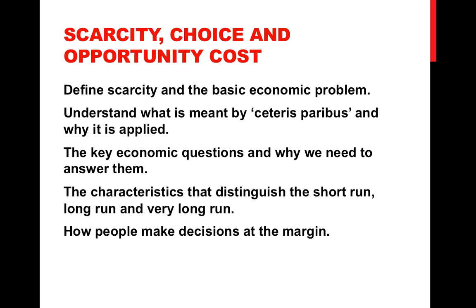Third, we're going to go to the three key economic questions and why we need to answer them: What will we produce? How will we produce it? For whom will we produce? Understand why those questions exist. Also understand the characteristics that distinguish the short-run, long-run, and very long-run — you must know that. And finally, how people make decisions at the margin, looking at something like marginal utility, where you determine whether to eat that next slice of pizza based on how much utility it will bring. Decision making at the margin is briefly introduced here and discussed in more detail in A2.